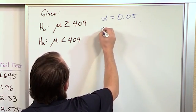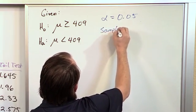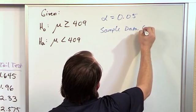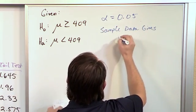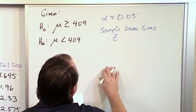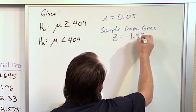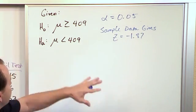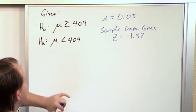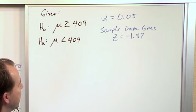And then we're also given that the sample data gives or yields that the test statistic is negative 1.87. So what we need to do is use this information to figure out are we going to reject this null hypothesis or fail to reject this null hypothesis.